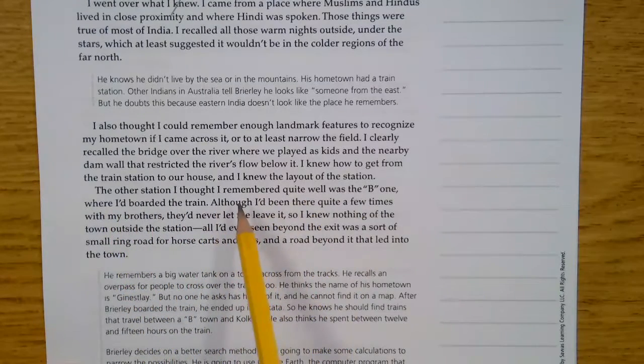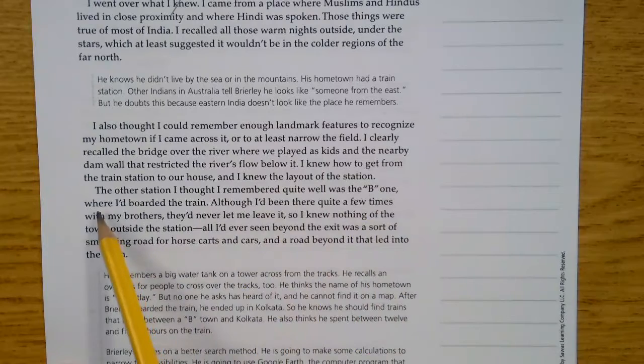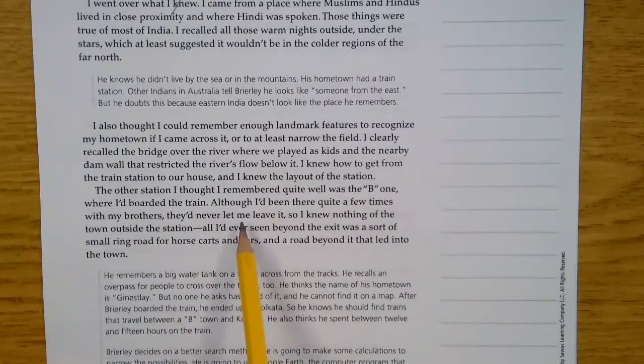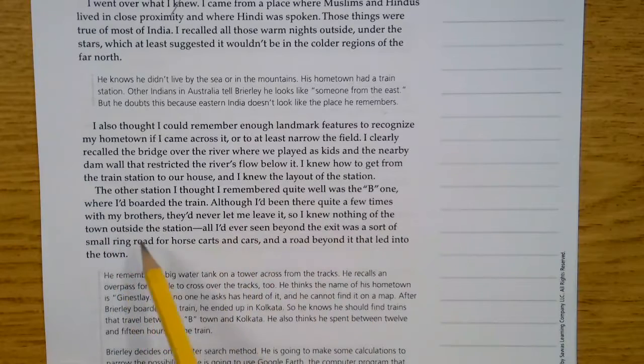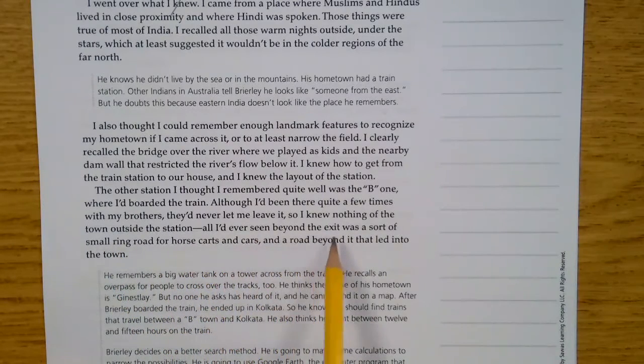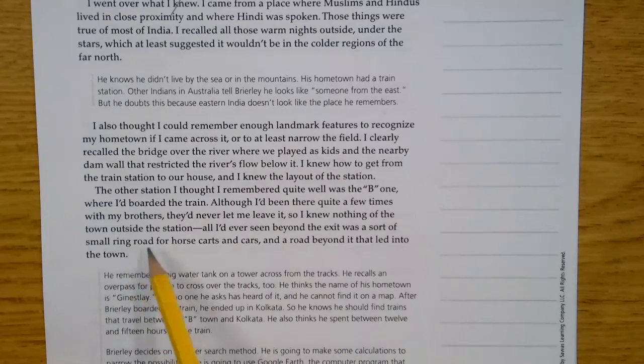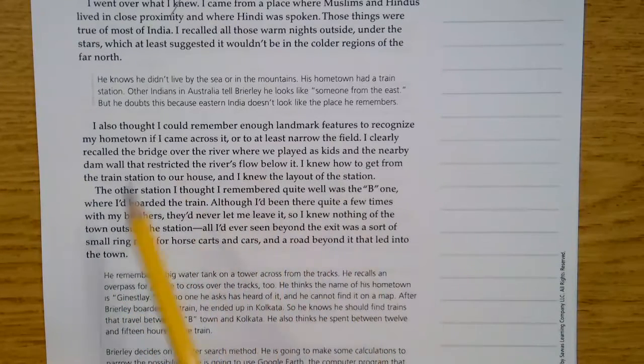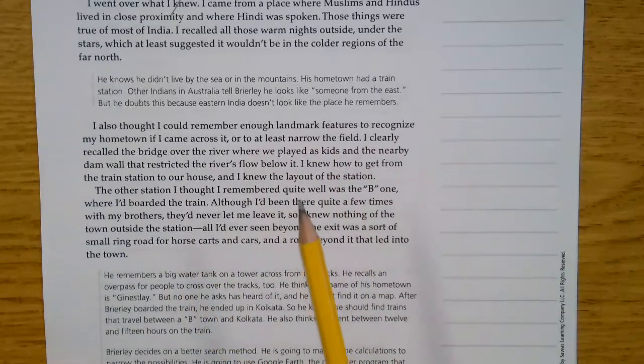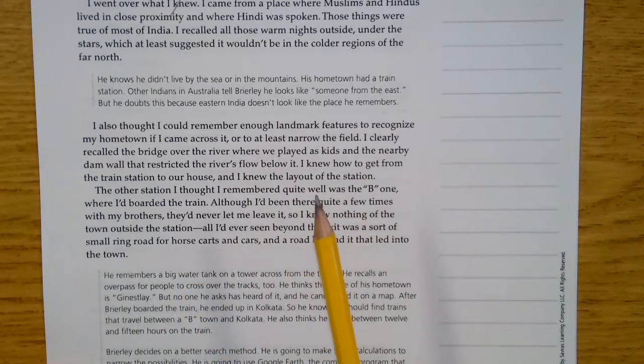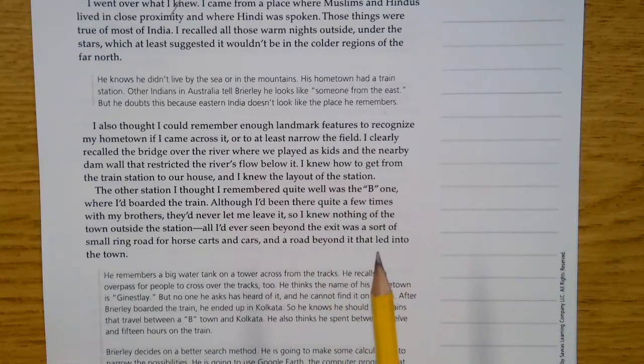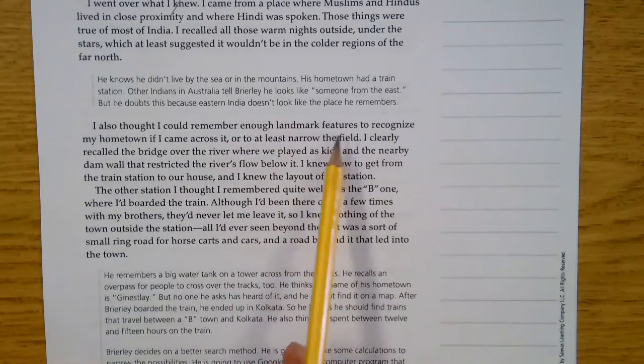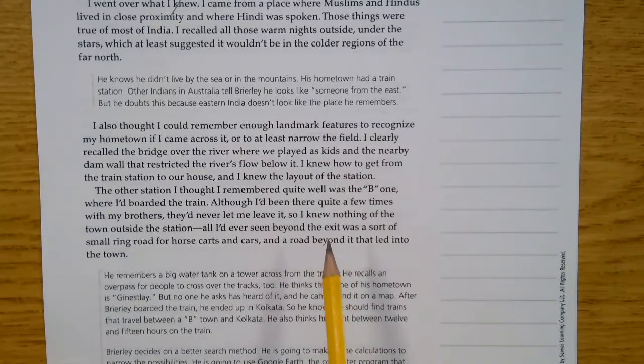The other station I thought I remembered quite well was the B one where I boarded the train. Although I'd been there quite a few times with my brothers, they never let me leave it. So I knew nothing of the town outside the station. All I'd ever seen beyond the exit was a sort of small ring road for horse carts and cars and a road beyond it that led into the town. So here in this paragraph we see that he remembers some of the things that he saw when he was five years old. He remembers some of the places that he went to when he was five years old. And he's hoping that these landmark features will help him to kind of remember if he were to see those landmarks on his search.